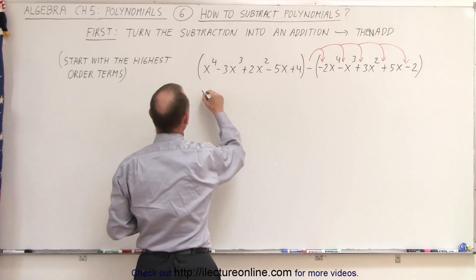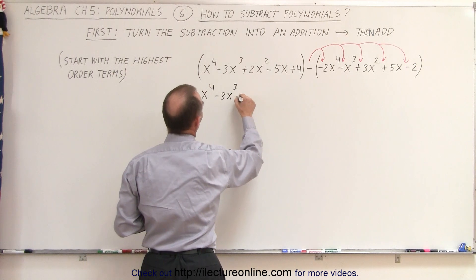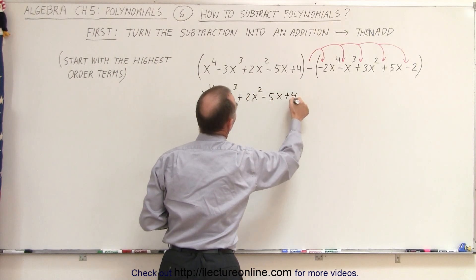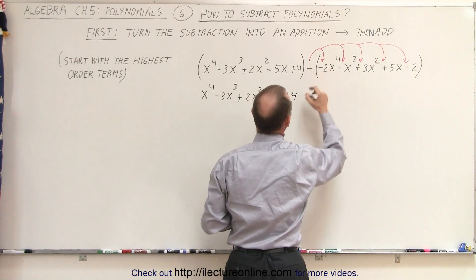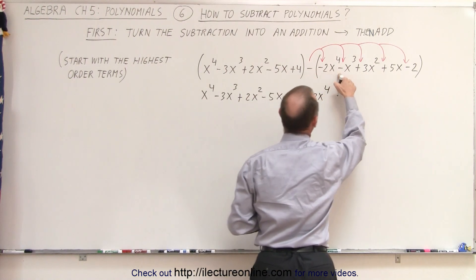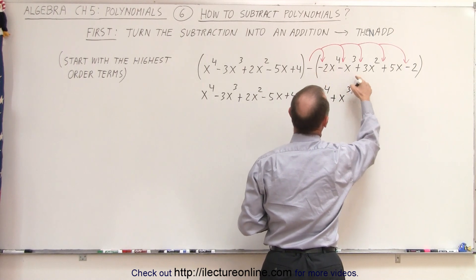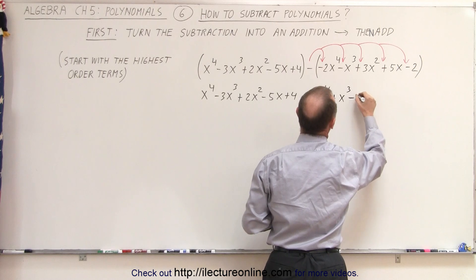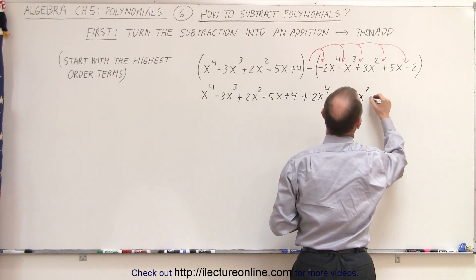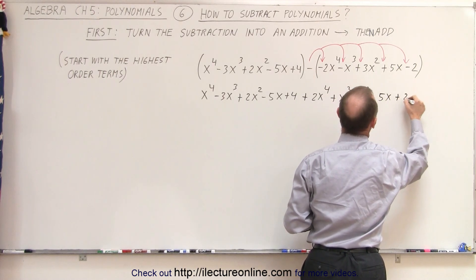So this can now be rewritten as x to the fourth minus 3x cubed plus 2x squared minus 5x plus 4, and then a minus times a minus gives us a plus 2x to the fourth, a minus times a minus gives us plus x cubed, a minus times a plus gives us a minus 3x squared, a minus times a plus gives us a minus 5x, and a minus times a minus gives us a plus 2.